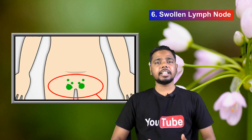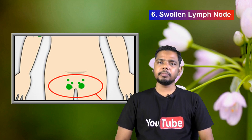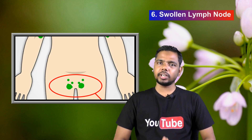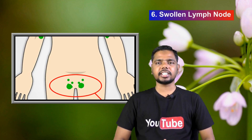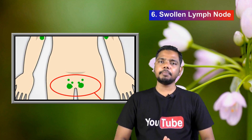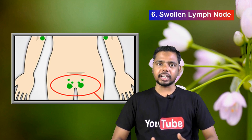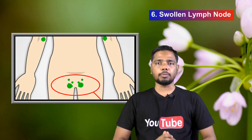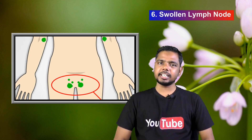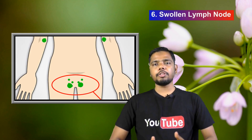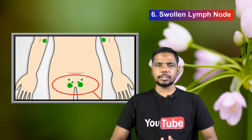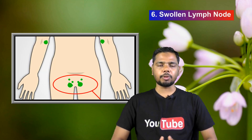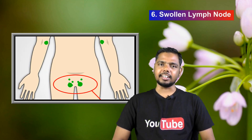Number six: swollen lymph node. Around 75% of women can experience inguinal lymph node swelling during their ovulation time. The inguinal lymph nodes are small glands located on both sides of the pelvis. Women may also experience swelling on the same side where the egg is released from the ovary.